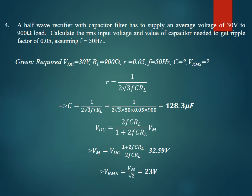Once Vm is found, the RMS voltage is simply Vm / √2. Importantly, irrespective of whether the rectifier is half-wave or full-wave, the input RMS always equals Vm / √2. Substituting Vm = 32.59 volts gives VRMS = 23 volts.